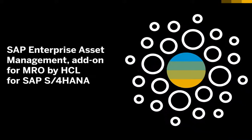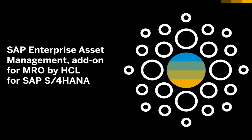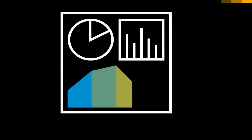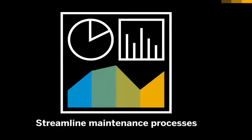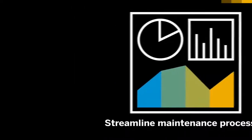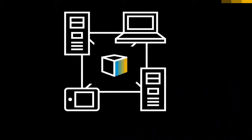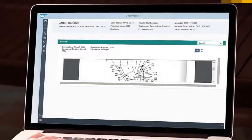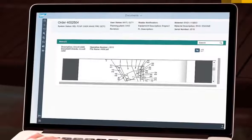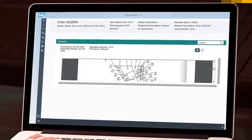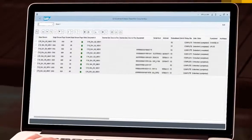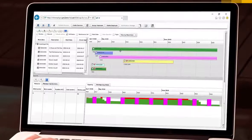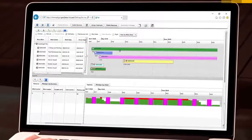Then you need SAP Enterprise Asset Management add-on for MRO by HCL for SAP S/4HANA. The add-on for MRO is purpose-built to streamline maintenance processes for asset-intensive organizations. It natively integrates maintenance, repair, and overhaul with your digital core. A broad range of industry and role-based experiences improves efficiency and productivity, providing functionality for six core processes.